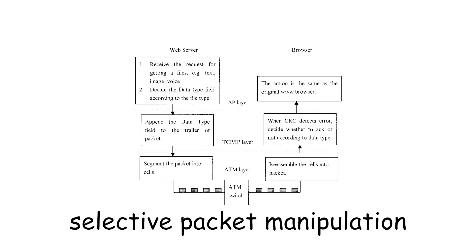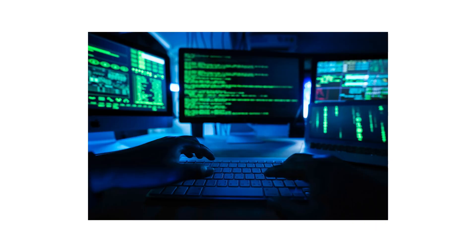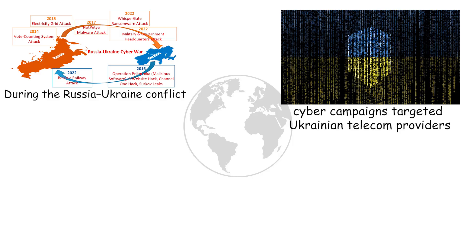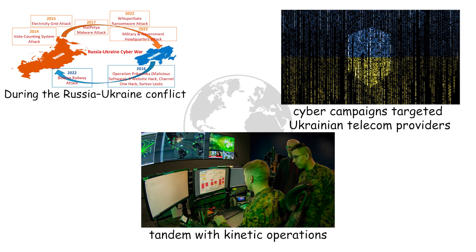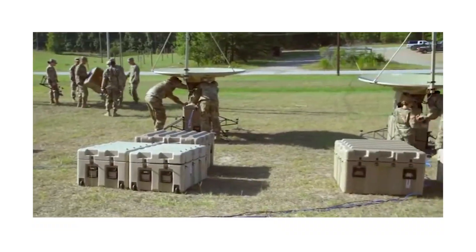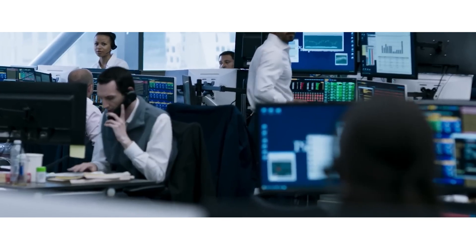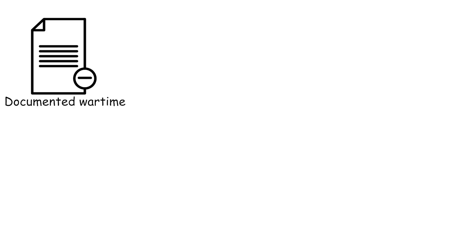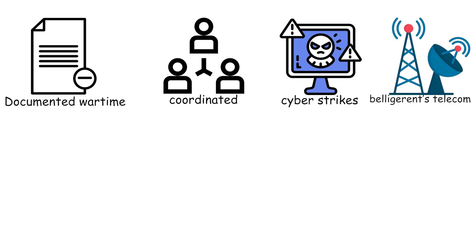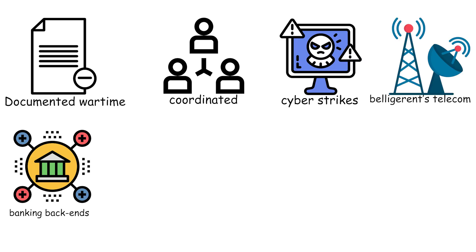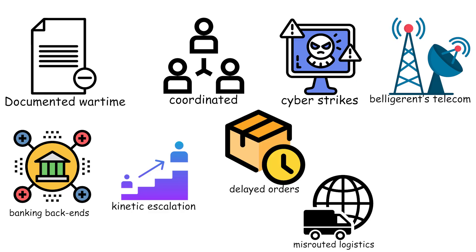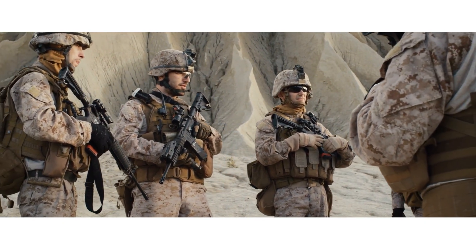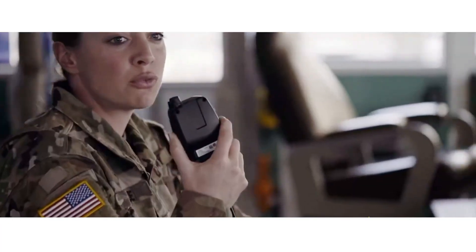Then targeted denial, selective packet manipulation, or temporary service outages timed to operational windows are employed. During the Russia-Ukraine conflict, cyber campaigns targeted Ukrainian telecom providers and logistics systems in tandem with kinetic operations. Outages in mobile and satellite communications disrupted command links, while banking back-end disruptions slowed supply chains. These well-timed strikes introduced delays and confusion at the tactical edge, producing delayed orders, misrouted logistics, and impaired tactical coordination. The strategic purpose is to create operational asymmetry — a force that can maneuver while the adversary's communications are degraded.